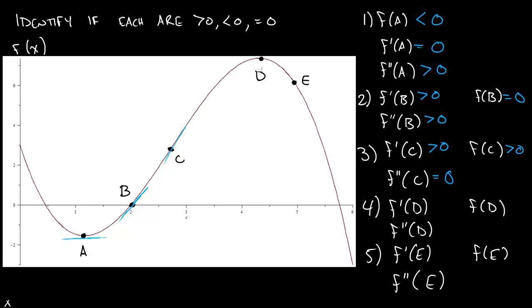Let's look at d. Again, it's above the x-axis, so f of d is greater than 0. f prime of d — we draw the tangent line, and that's going to be equal to 0. And for f double prime, we need to know the concavity. This is concave down, so it's less than 0.